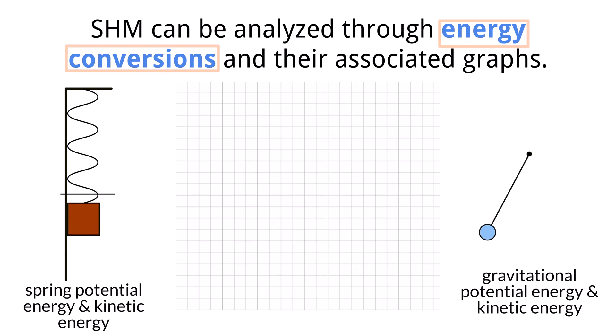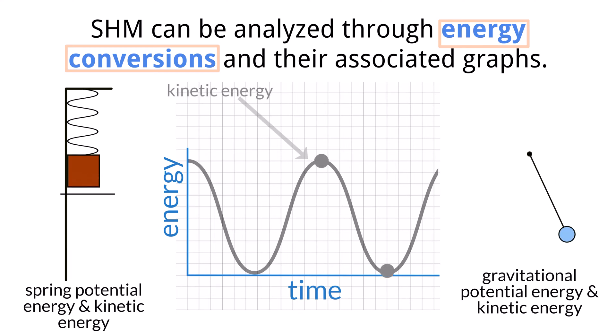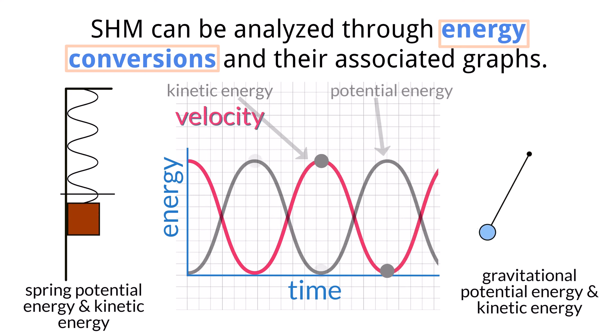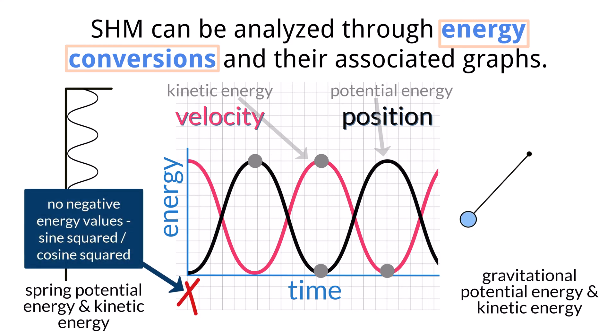As with the kinematic simple harmonic motion graphs, the energy versus time graphs for simple harmonic motion are also sinusoidal in nature. The kinetic energy minima and maxima line up at the times when the velocity is also at its minima and maxima. The potential energy minima and maxima line up with the times during which the position is at a minima or maxima. The thing to take note of in these graphs is that there will be no negative energy values, so the graphs appear as sine-squared or cosine-squared graphs.